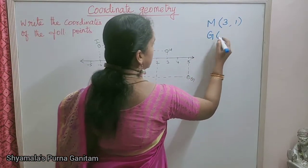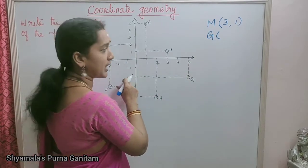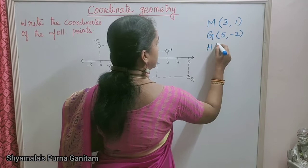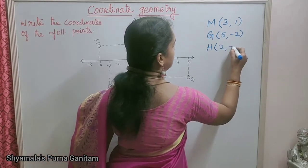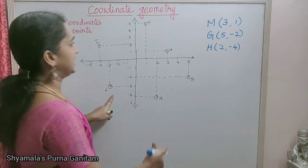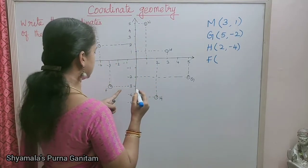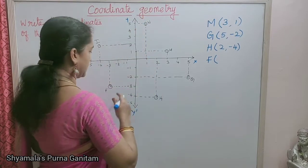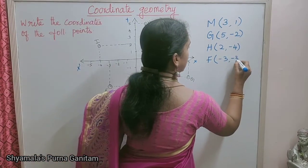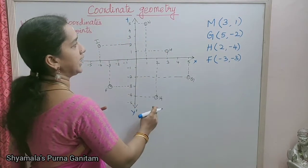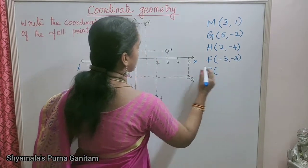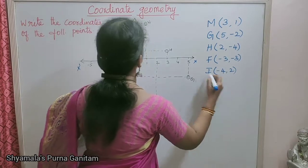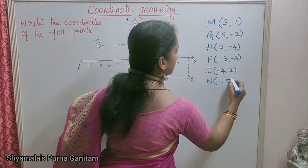Point G — x-axis is 5 and y-axis is −2, so G is (5, −2). Point H — x-axis is 2 and y-axis is −4, so H is (2, −4). Point F — x-axis is −3 and y-axis is −3, so F is (−3, −3). Point I — coordinates are (−4, 2). Point N — coordinates are (1, 5).